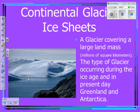A continental glacier, or ice sheet, is what we think of with Greenland and Antarctica. It's a glacier covering a large landmass — typically millions of square miles or kilometers. This type of glacier occurred during the ice age and is present today in Greenland and Antarctica, covering those entire landmasses.